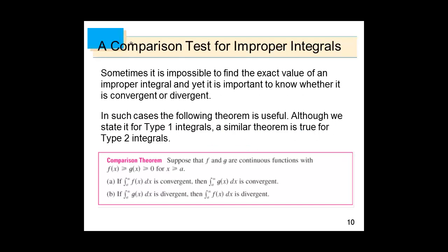A Comparison Test for Improper Integrals: suppose f(x) ≥ g(x) ≥ 0 for x ≥ a. Then: (a) if the integral from a to ∞ of f(x) dx is convergent, then the integral from a to ∞ of g(x) dx is also convergent; (b) if the integral from a to ∞ of g(x) dx is divergent, then the integral from a to ∞ of f(x) dx is divergent as well.